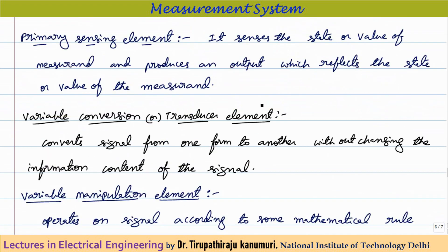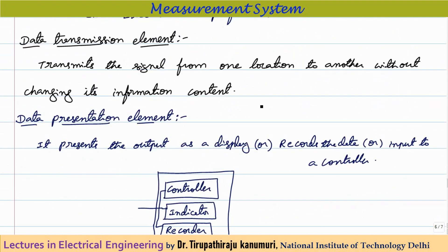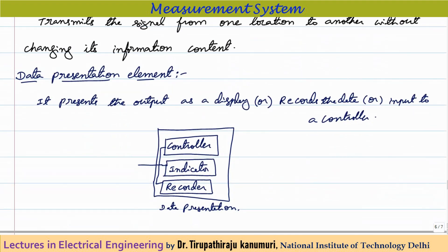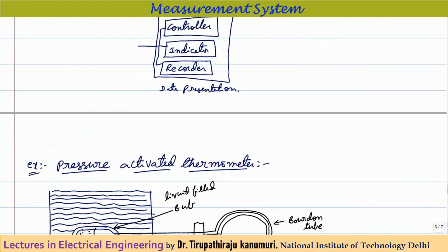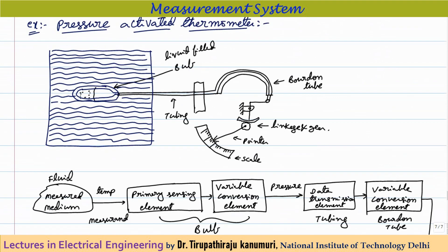A combination of these functional blocks — primary sensing element, variable conversion element, variable manipulation element, data transmission element, and data presentation element — makes up any measurement system.